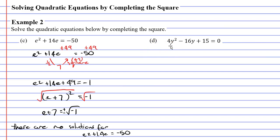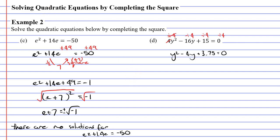We'll now move on to question D. You might notice that this is not a monic quadratic, because we have a 4 next to the y squared. This is a bit of an issue because the technique we've been using only works with monic quadratics. But we can fix that quite easily — we divide every term by 4. This will cancel the 4s and turn it into a monic quadratic, giving us y squared minus 4y plus 3.75 equals 0, because 0 divided by 4 is 0.